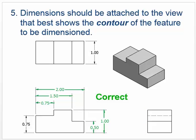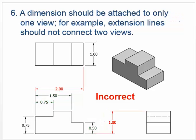A dimension should be attached to only one view. For example, extension lines should not connect two views. I've never had students do this, but apparently some have tried connecting a top view and a front view using those as extension lines. You would dimension it to only one side, and dimensioning to one side works for both views. Bring the extension line from one side, not across to the other.